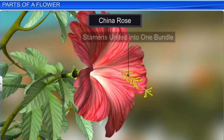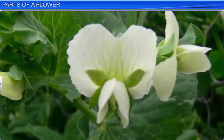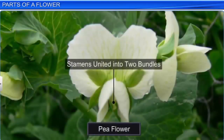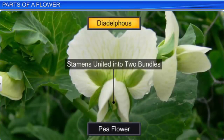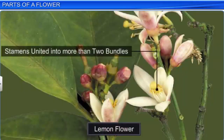In china rose, the stamens are united into one bundle and are called monoadelphous. In the pea flower, the stamens are grouped into two bundles and are called diadelphous. In the lemon flower, the stamens are grouped into more than two bundles and are known as polyadelphous.